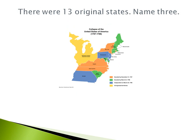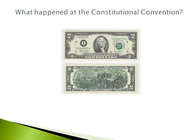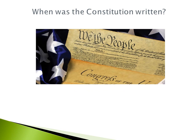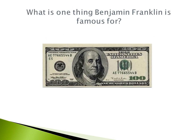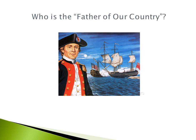There were 13 original states — name three. Virginia. What happened at the Constitutional Convention? When was the Constitution written? The Federalist Papers supported the passage of the U.S. Constitution — name one of the writers. What is one thing that Benjamin Franklin is famous for? Who is the Father of our Country? Who was the first president?